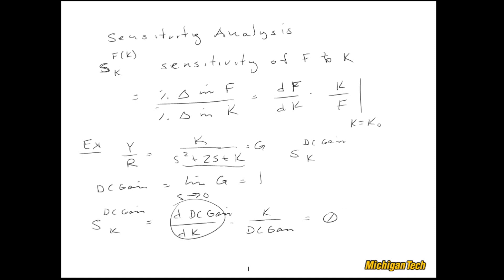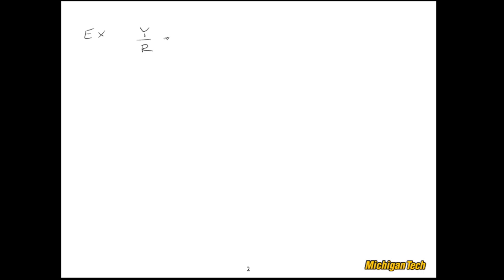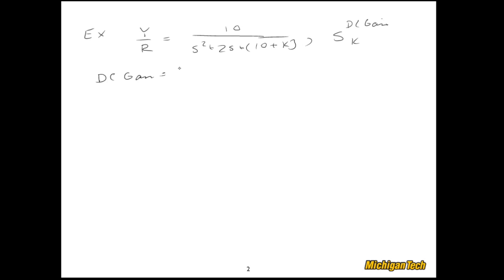Let's do another DC gain focused example. Now let's say y over r equals k over s-squared plus 2s plus 10 plus k. I'll find the sensitivity of the DC gain with respect to k. The DC gain expression is now 10 over (10 plus k), so it's definitely a function of k.